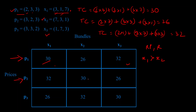Moving on to price P2: at P2 you're purchasing bundle X2 for 30 dollars. X3 at price P2 would have cost only 26 dollars, but you still chose X2, so you prefer X2 over X3. X1 at P2 costs more than 30, so that's inconclusive. At price P3 you're purchasing X3 for 30 dollars. X1 at P3 costs only 26 dollars, but you chose X3 — so you prefer X3 over X1.